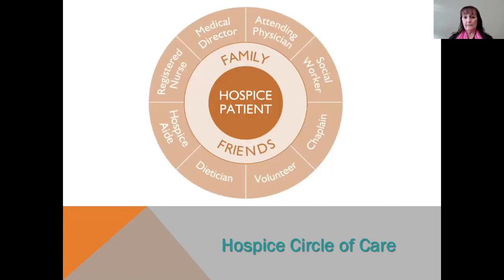The hospice circle of care includes an RN, a social worker, a medical director, and your attending physician. It can also include a hospice aide when you need additional help with personal daily needs, a dietician, a chaplain, and a volunteer. Not all clients access every service — it depends on what's happening with you and your family dynamics.